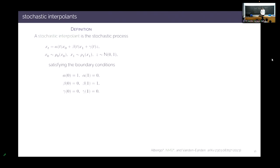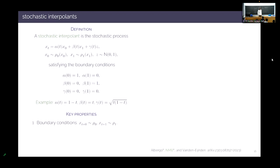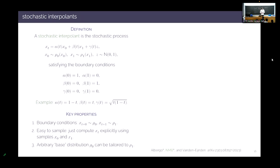I introduce an object called a stochastic interpolant. The stochastic process X_t is a linear combination of x_0 (from base distribution rho_0, which can be arbitrary), x_1 (a draw from the target), and z (standard normal), with coefficients alpha, beta, gamma satisfying boundary conditions: alpha starts at 1 and ends at 0; beta starts at 0 and ends at 1; gamma starts at 0 and ends at 0. For example, alpha = 1 - t, beta = t, gamma = sqrt(t(1-t)) — from the Brownian bridge. Key properties: correct boundary conditions (X_0 ~ rho_0, X_1 ~ rho_1), easy to sample, and the base distribution is arbitrary.